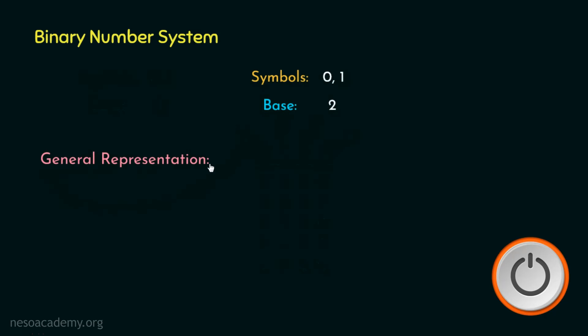Now coming to the general representation, consider a 5-bit binary number. Now in all these places, we can either place 0 or 1. Now being a binary number, it will have the base as 2, and therefore the place values will be 2 raised to the power 0, 2 raised to the power 1, 2 squared, 2 cubed, till 2 raised to the power 4.